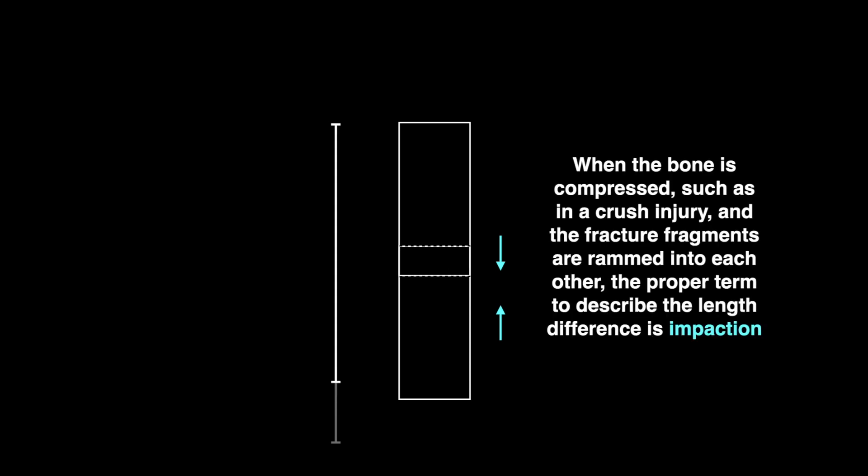So here, imagine that the fracture fragments are being compressed into one another. When the bone is compressed, such as in a crush injury, and the fracture fragments are rammed into each other, the proper term to describe the length difference is impaction.